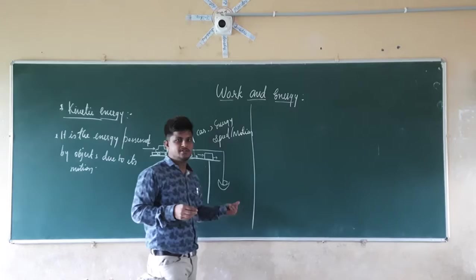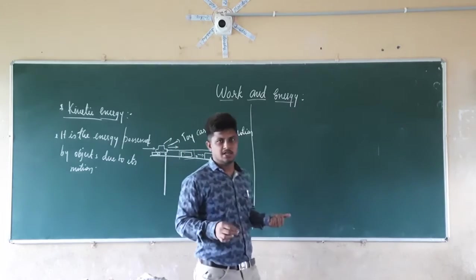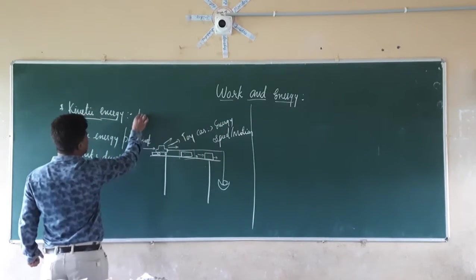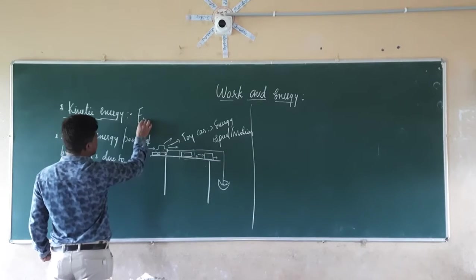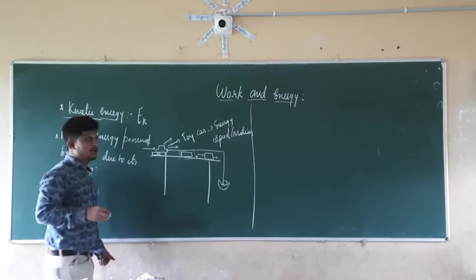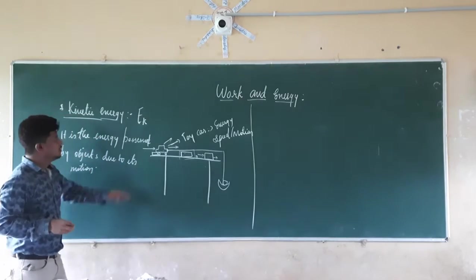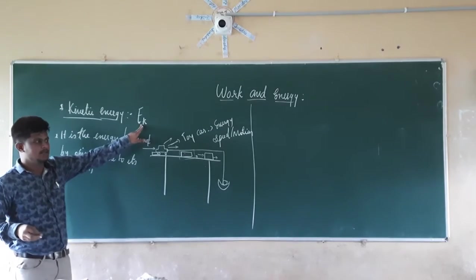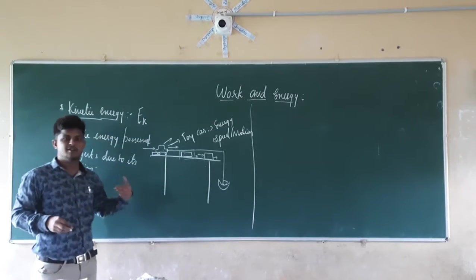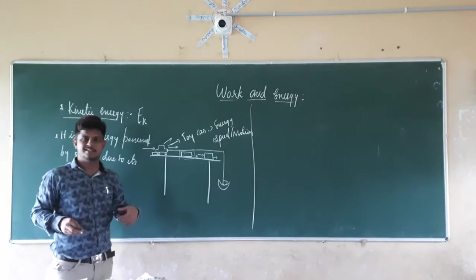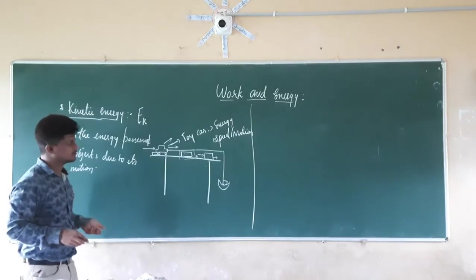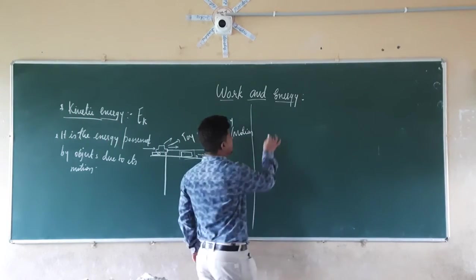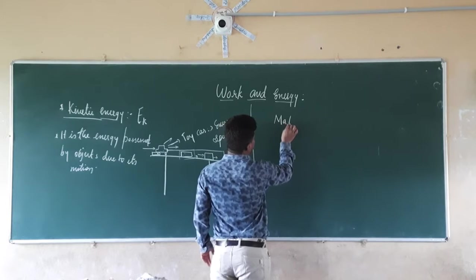Next we are going to see the mathematical form of kinetic energy. Kinetic energy can be denoted as Ek. Since it is energy, its unit is also joules.